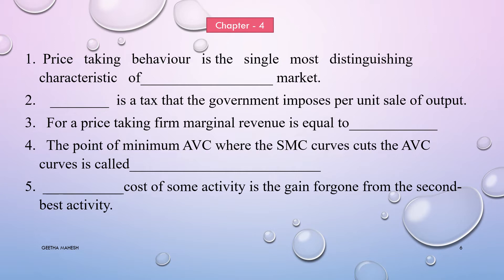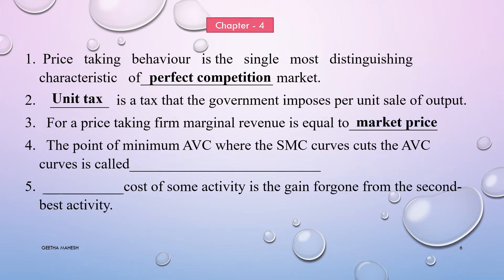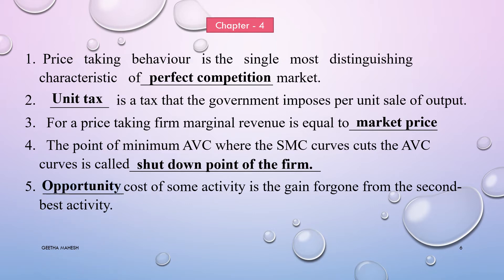Let us discuss a few important fill in the blanks from the fourth chapter, the theory of firms and perfect competition. Price taking behavior is the single most distinguishing characteristic of a perfect competition market. A unit tax is a tax that the government imposes per unit of sale of output. For a price-taking firm, marginal revenue is equal to market price. The point of minimum AVC where the SMC curve cuts the AVC curve is called the shutdown point of the firm. The opportunity cost of some activity is the gain foregone from the next best activity.